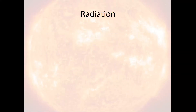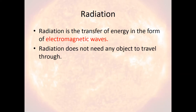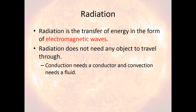So first off, what is radiation? The last lecture we talked about conduction, which requires a solid object for heat to travel through it, and convection, which requires a fluid for heat to travel through it. Well, radiation is different. Radiation represents the transfer of energy in the form of what are called electromagnetic waves — basically beams of electricity and magnetism. Radiation doesn't need anything to travel through. It doesn't need a conductor, it doesn't need a fluid. It can travel through a vacuum, through empty space, which is a good thing because that's how light gets from the sun to us.